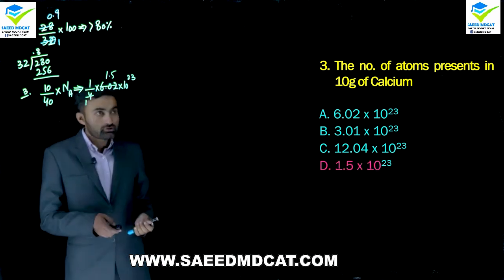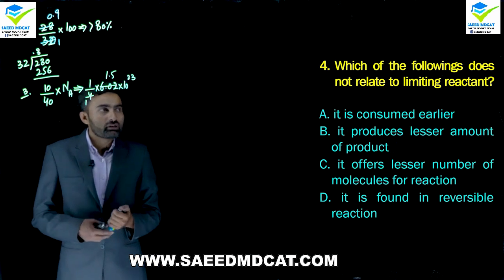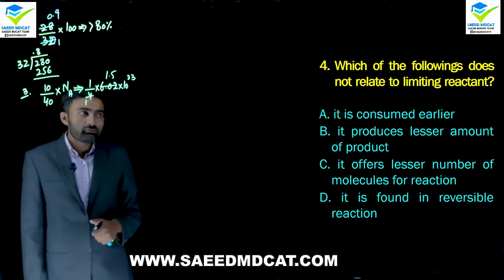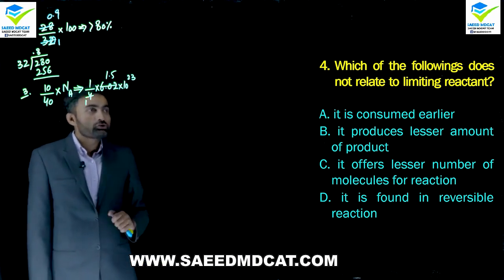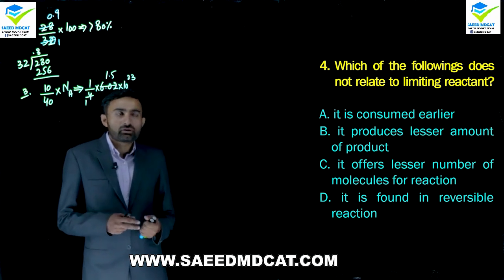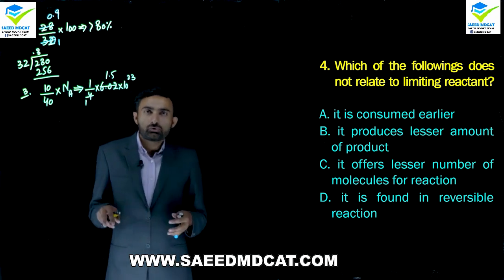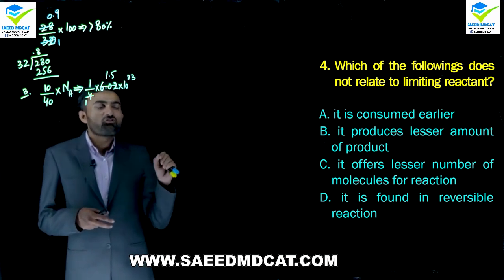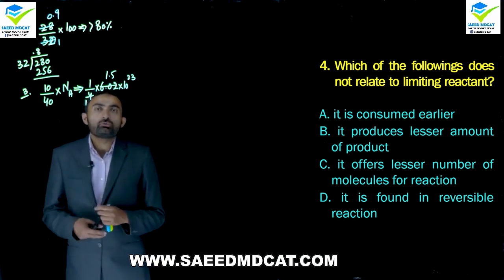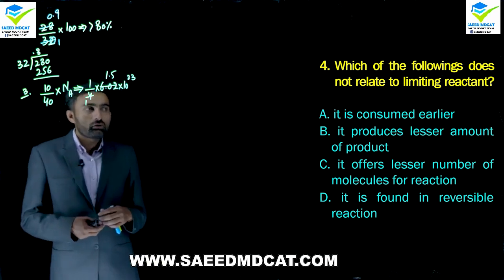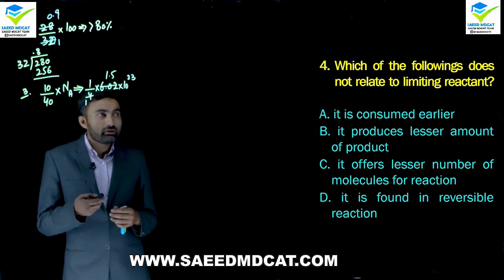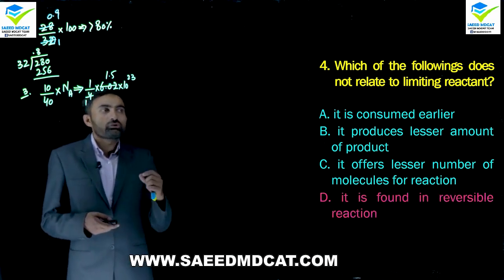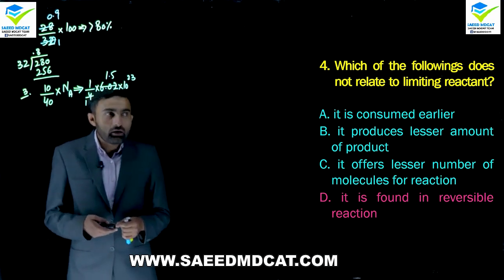Question 4: Which of the following does NOT relate to limiting reactant? Alpha — it is consumed earlier: correct. Beta — it produces lesser amount of product: correct. Charlie — it offers lesser number of molecules for reaction: correct, because its molecules are exhausted first. Delta — it is found in reversible reaction: No, limiting reactant concept does not apply to reversible reactions. So delta option is correct.